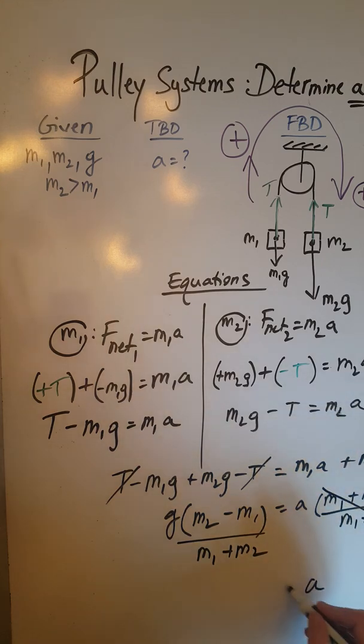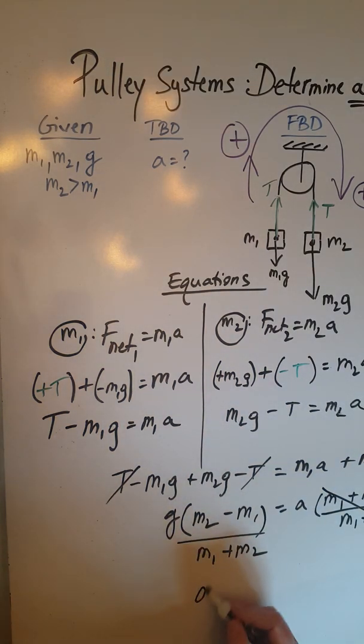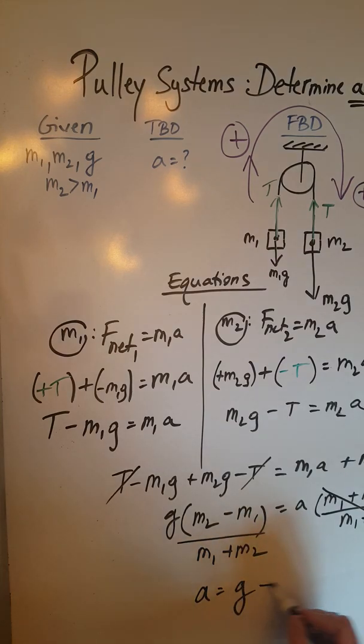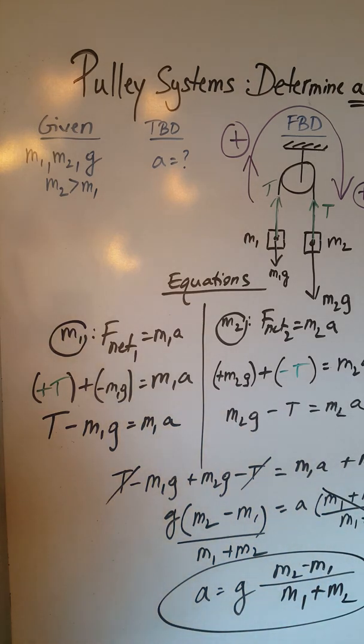So then A is going to be equal to G, let me write it actually over here so we can see it better. So A is going to be equal to G times, fraction bar, M2 minus M1 in the top, M1 plus M2 in the bottom. Circle. That is our answer.